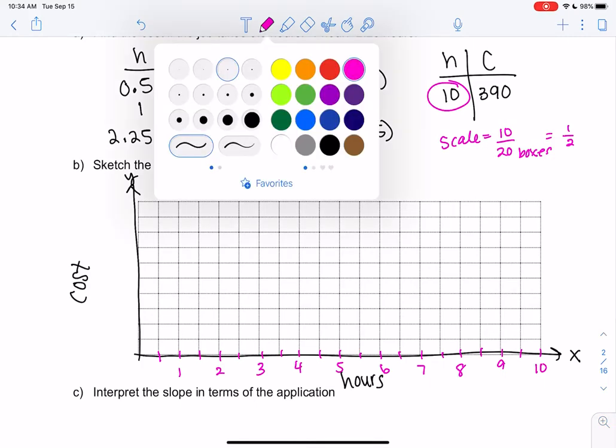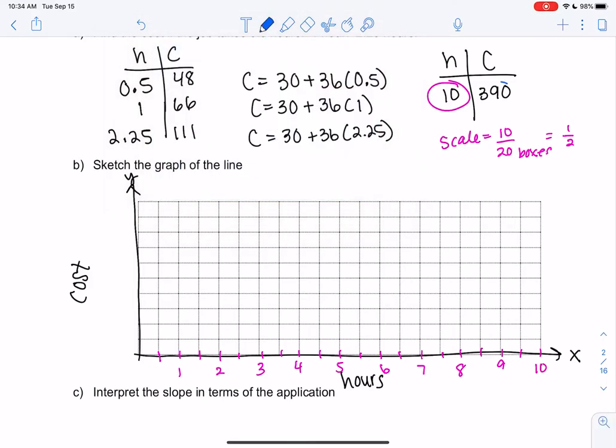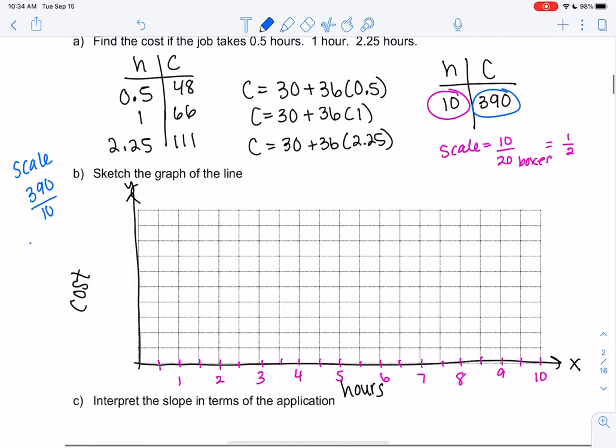So if we want to scale the vertical, we're going to take the largest value, which is 390. And then boxes are different up and down, 1, 2, 3, 4, 5, 6, 7, 8, 9, 10. We only have 10 up and down. And we get 39, which I am not counting by 39. So I'll probably round that up to 40 or 50. I'll probably just do 40. But we want to round to something a little bit nicer.